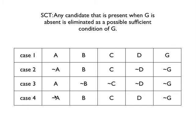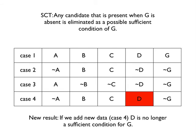we had A absent, G absent, and B, C, and D present. If we were to add this further data, then D is no longer a sufficient condition for G, because now D is present when G is absent.